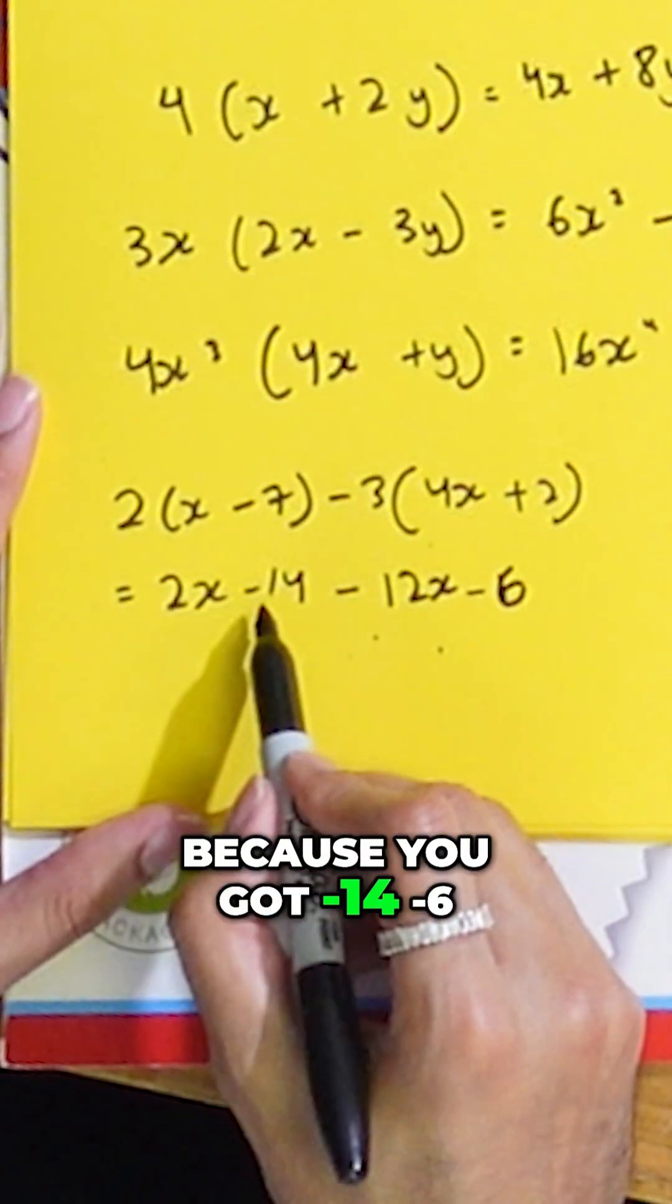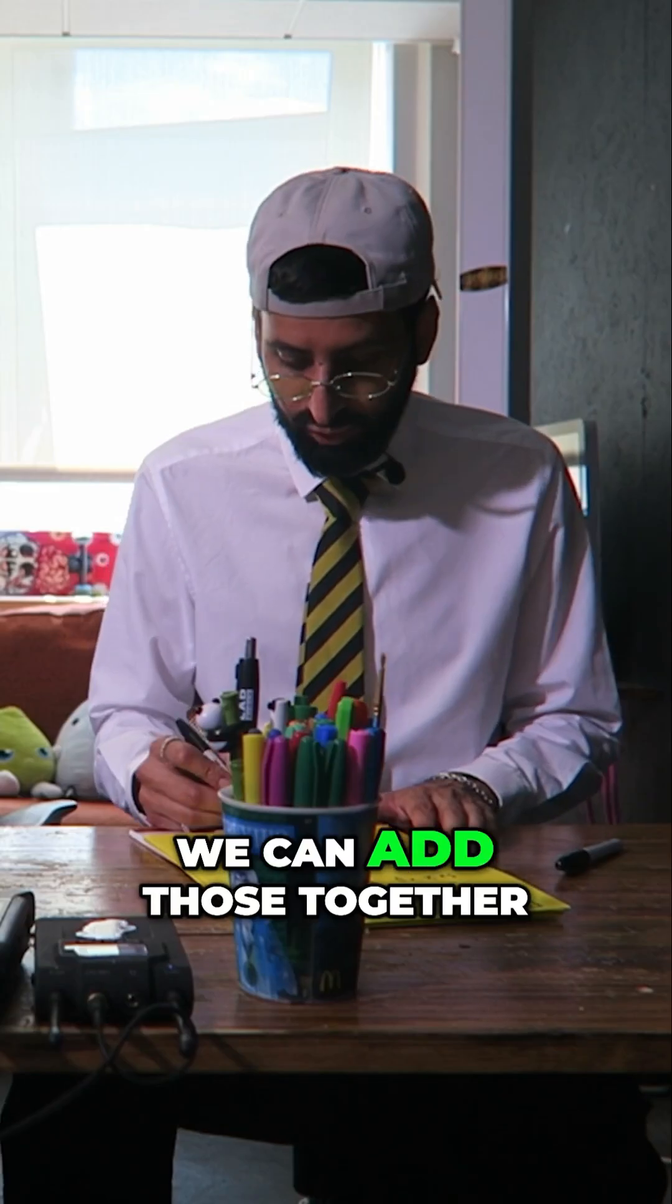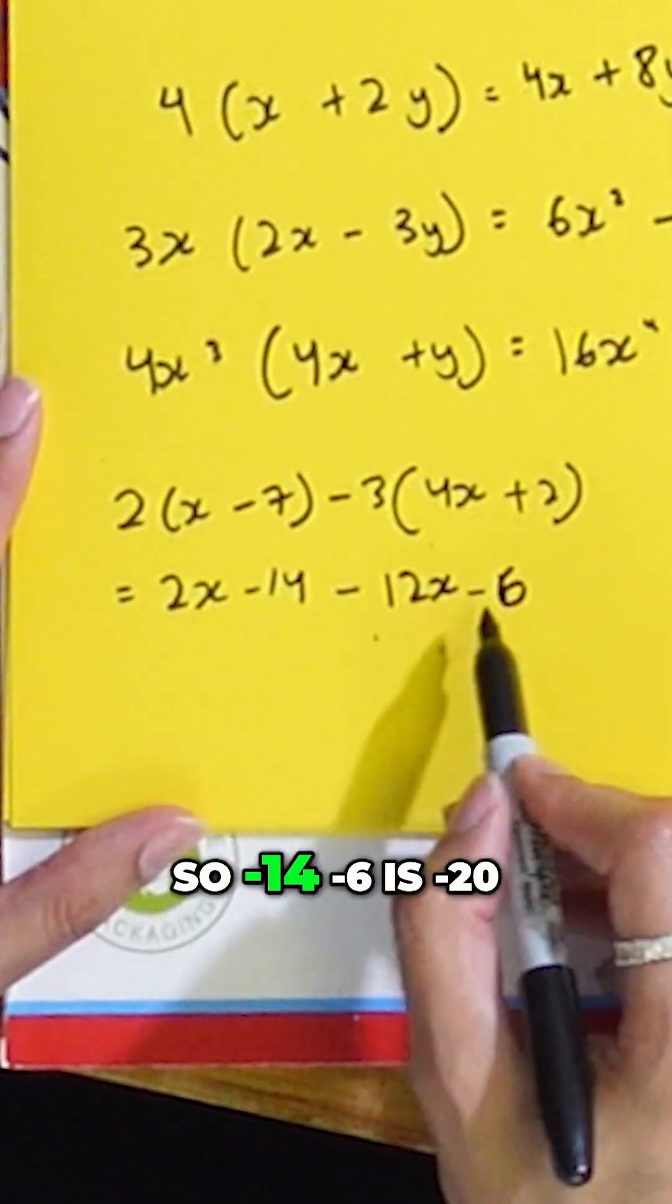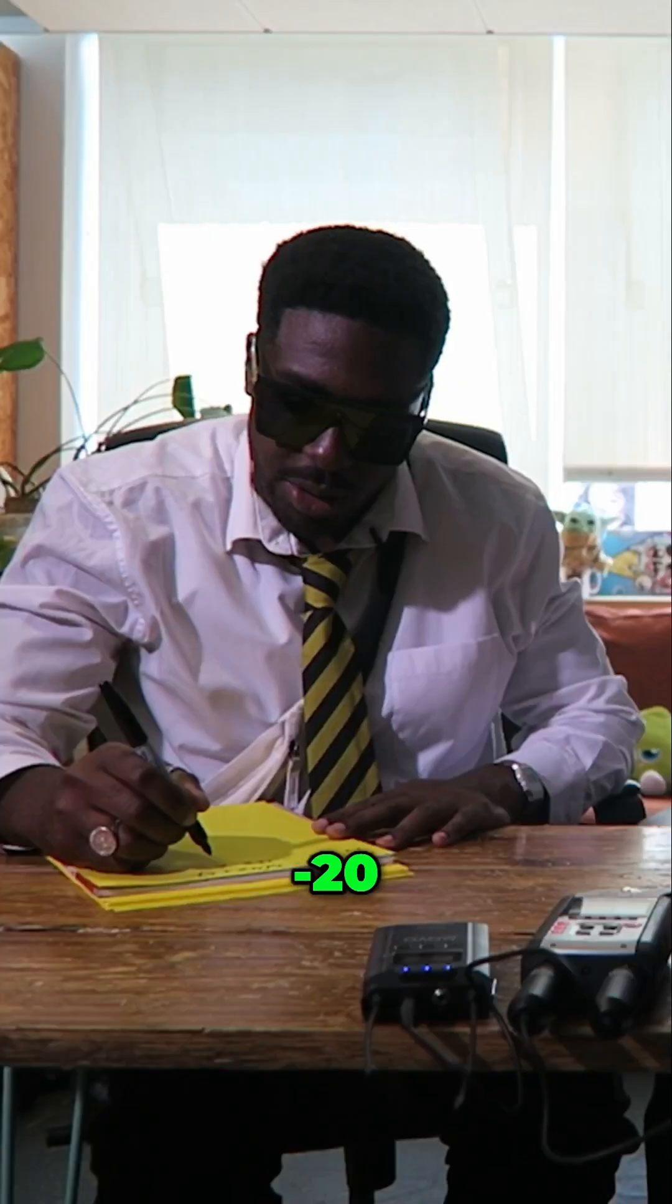And then, because you've got minus 14, minus six, we can add those together. So it'll still be a minus. Oh yeah, so minus six, 14 minus six is minus 20. Minus 20.